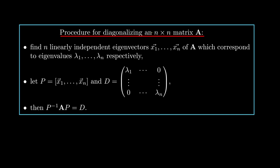To diagonalize a matrix A means to find a matrix P, which is invertible, and a matrix D, which is diagonal, such that this equation here holds.